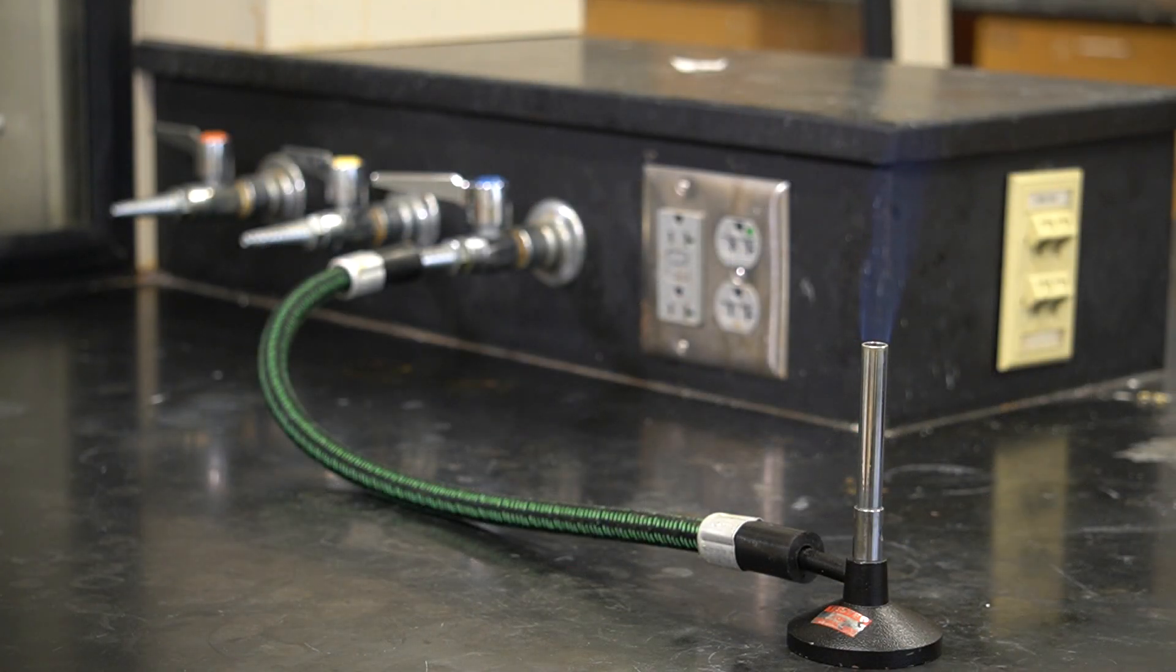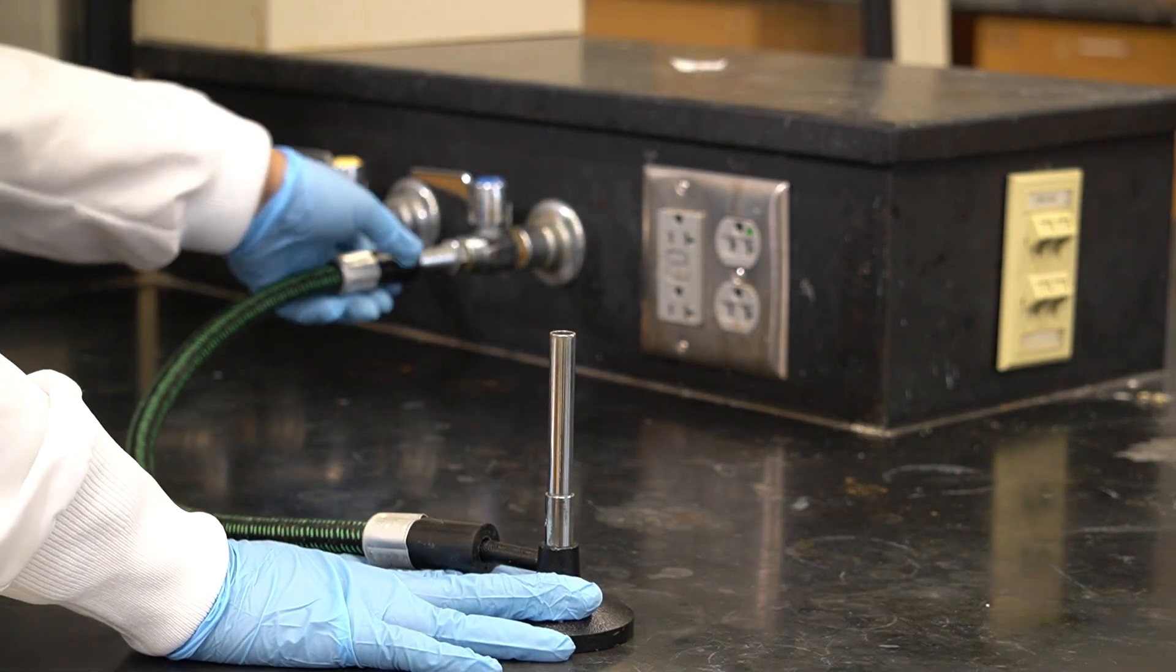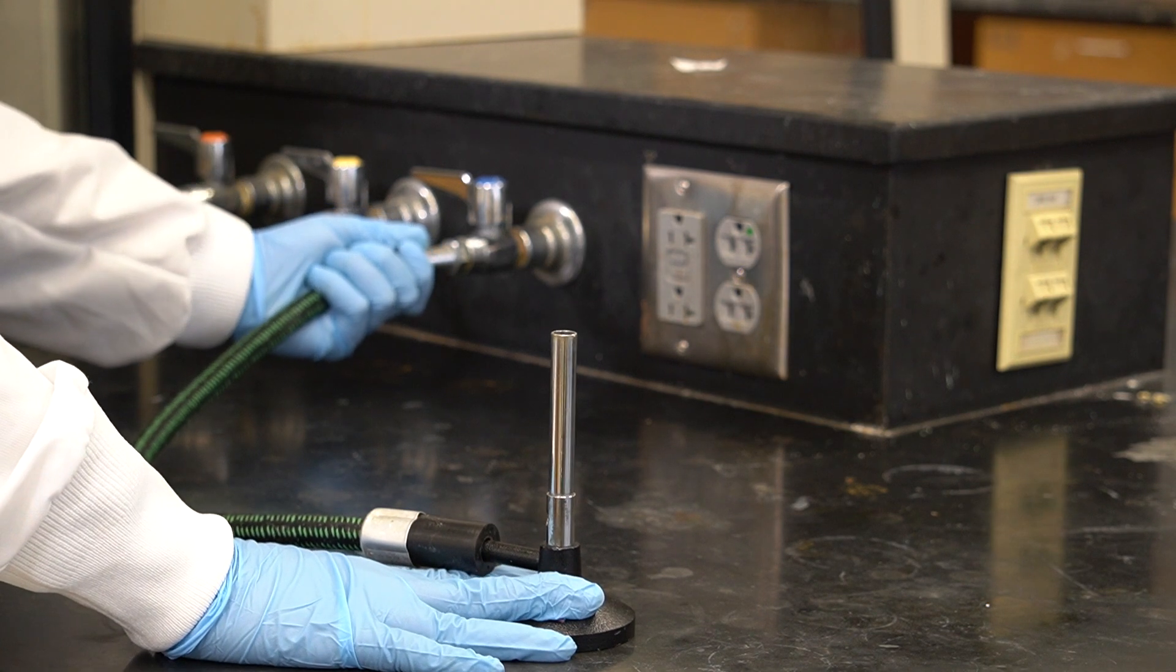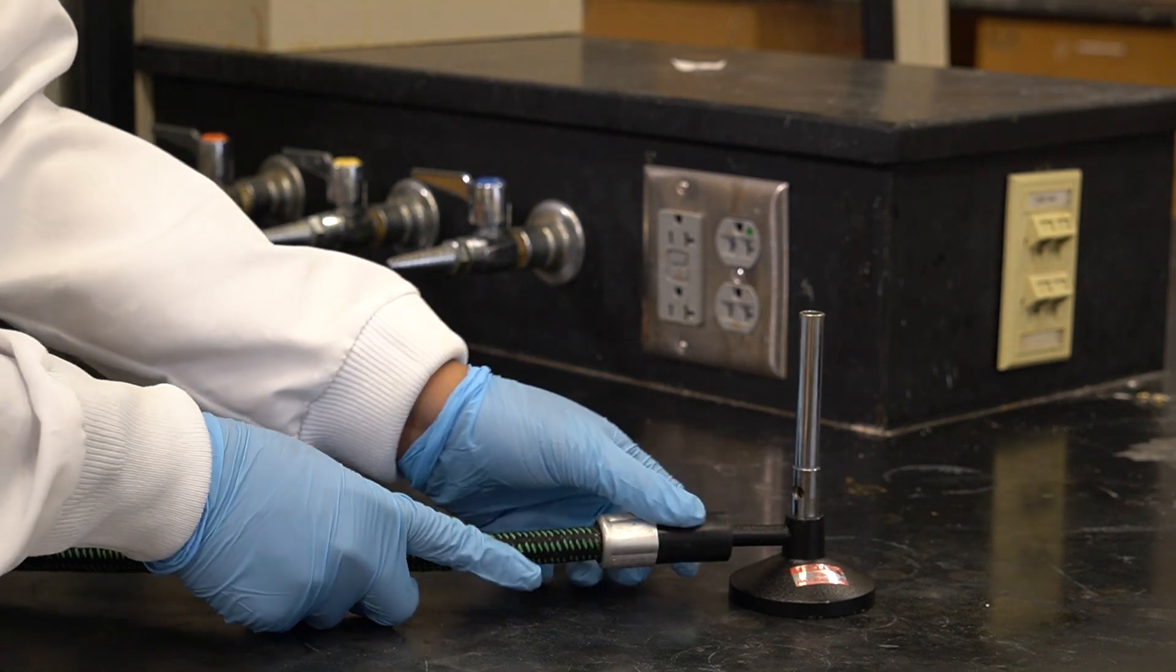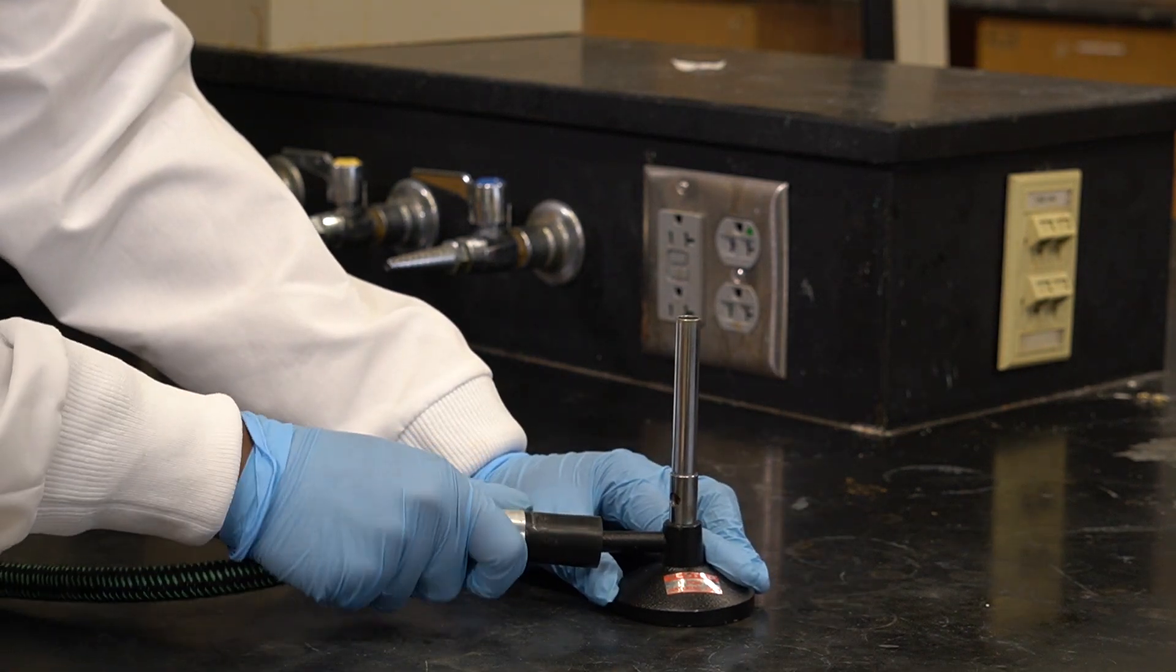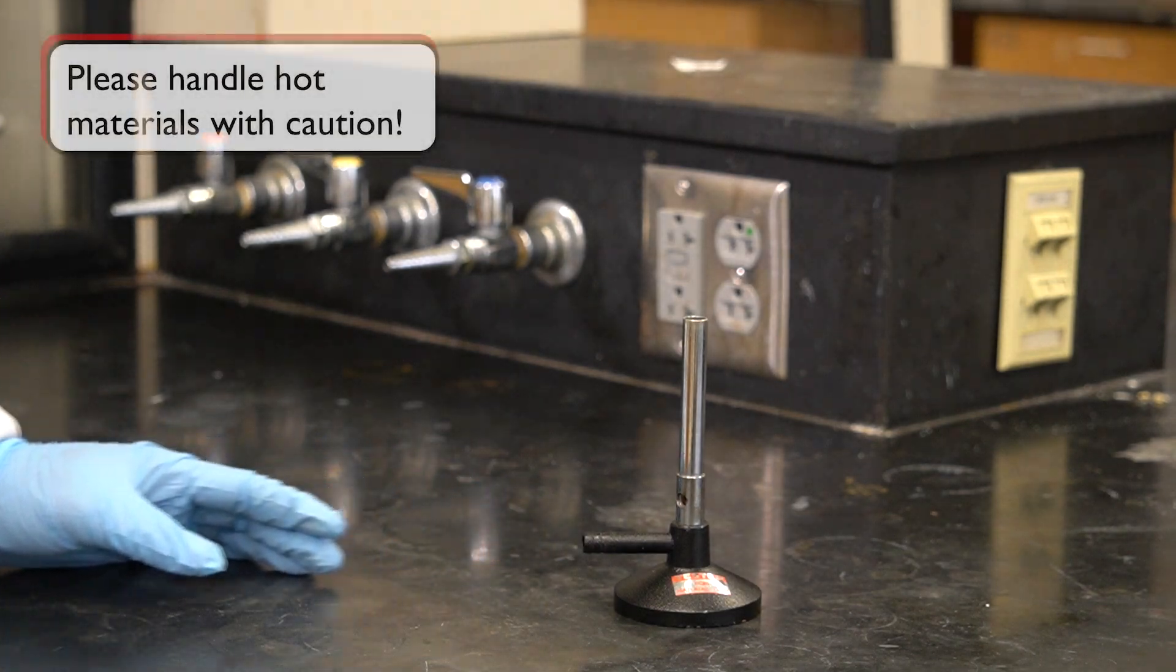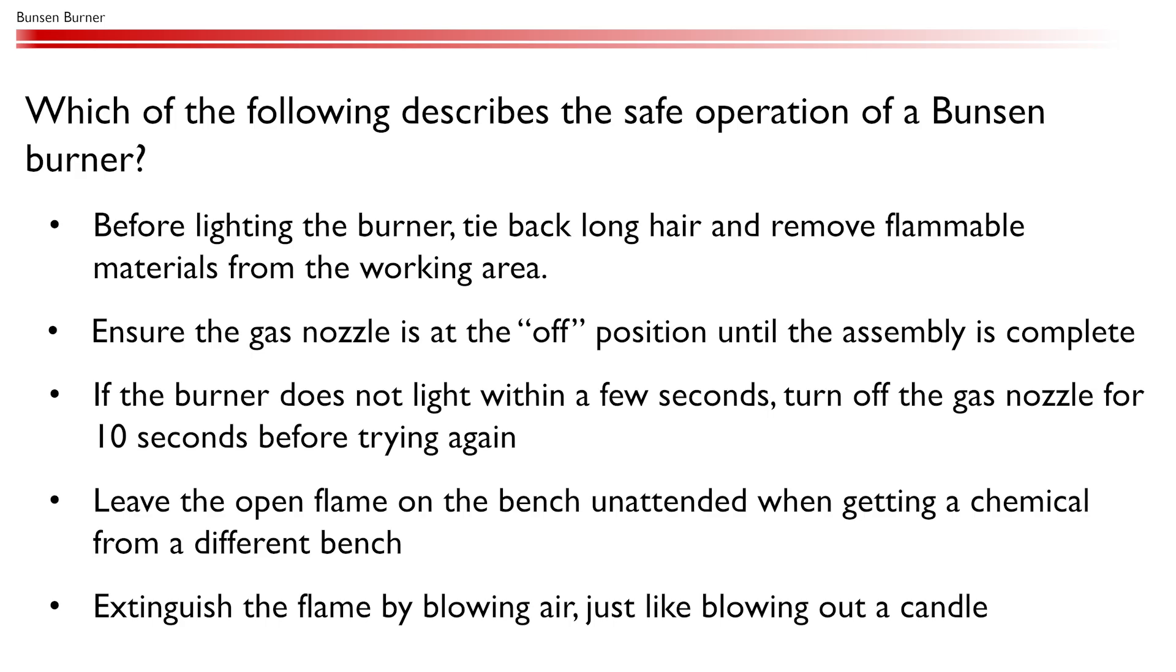To disassemble the burner, first turn off the gas nozzle. This will extinguish the flame. Please be careful when handling the equipment as it may be hot from our use. We can stabilize the burner by its base to avoid touching the hot metal. Remove the tubing from the gas nozzle at our workbench and from the gas inlet on our burner. It is very important to handle hot materials with caution. Which of the following describes the safe operation of a Bunsen burner?